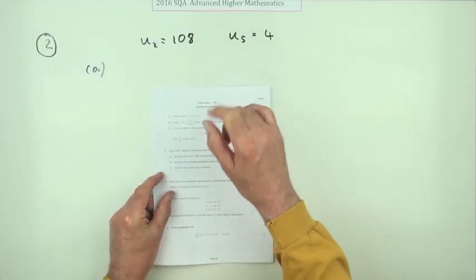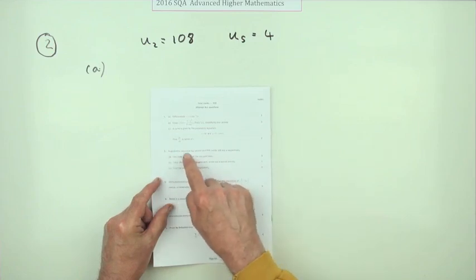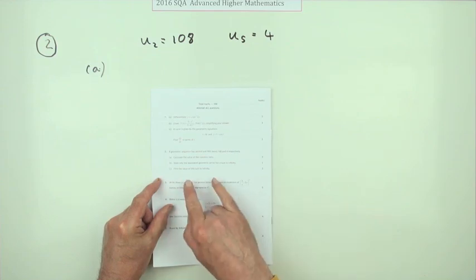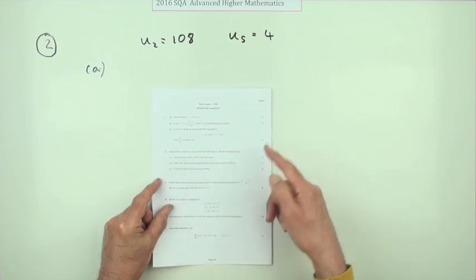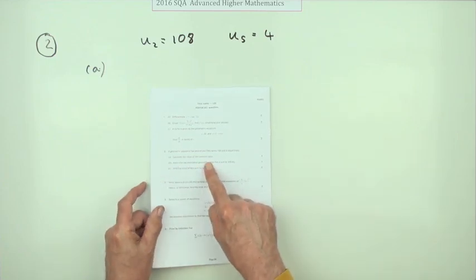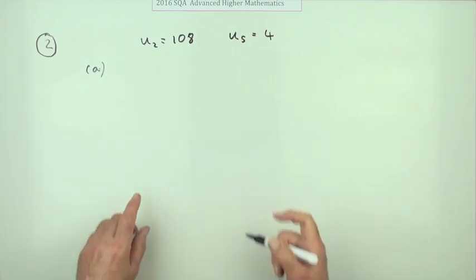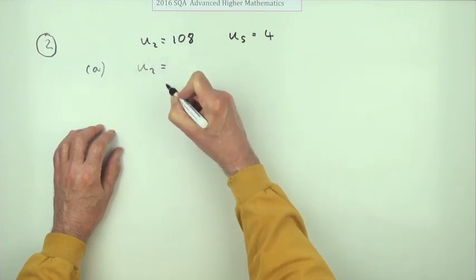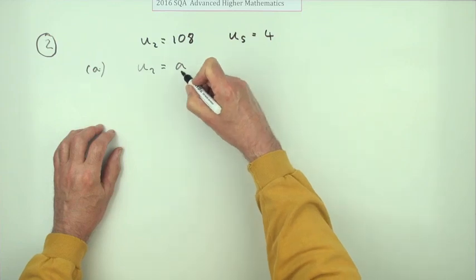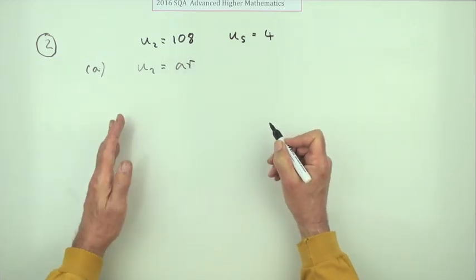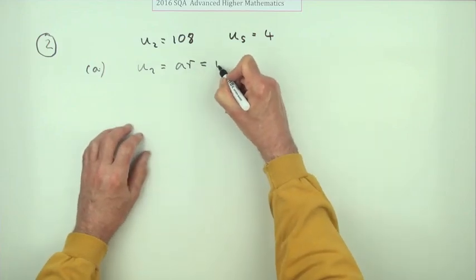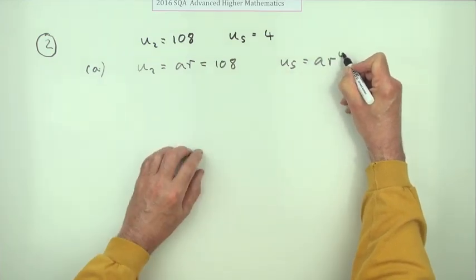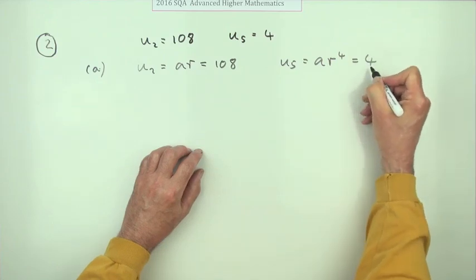Question two then from the 2016 Advanced Higher Maths. Here we go. Geometric sequence. Last year it was an arithmetic one. Part A for three marks out of the six. Calculate the value of the common ratio. Well, the second term in a geometric sequence is given by the first term multiplied by the ratio. You just keep multiplying by the ratio each time and that comes to 108. By the time you get to the fifth term, you'll have multiplied by that ratio four times and that'll take you to four.